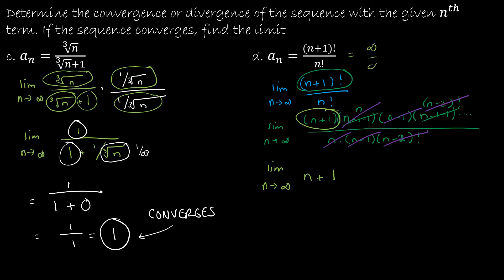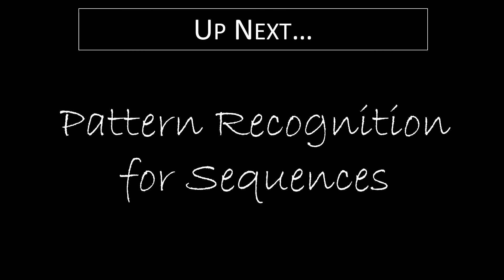Now if I think about direct substitution — because again, if I would have tried direct substitution earlier it would just have been infinity over infinity, meaning find a new strategy — but now I can see I have infinity plus 1, so the limit is infinity.